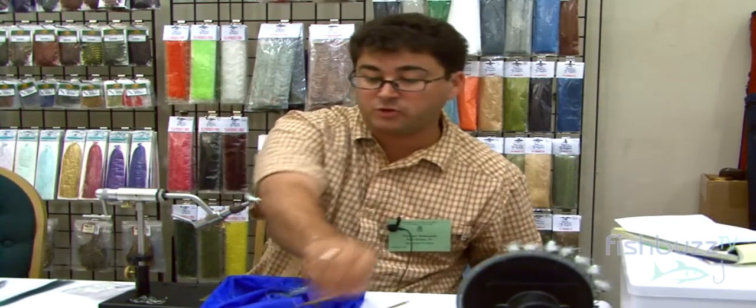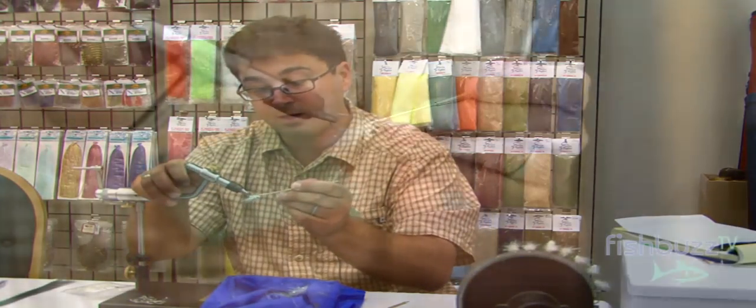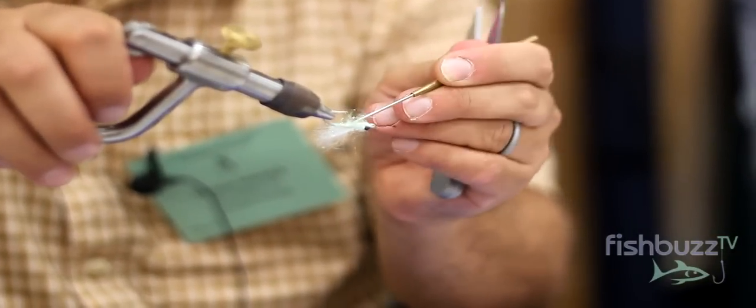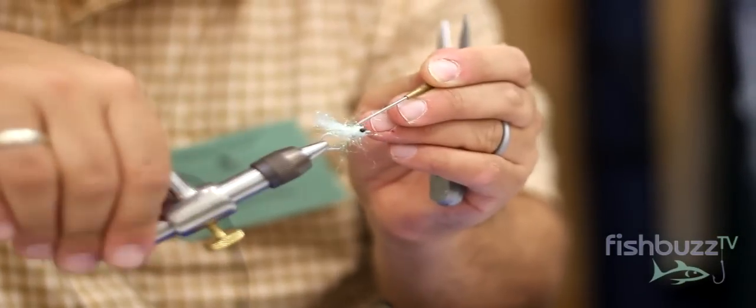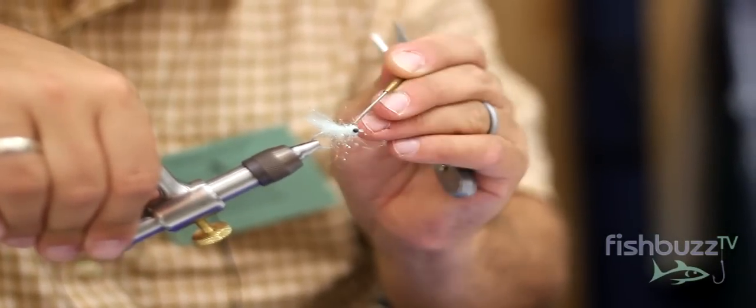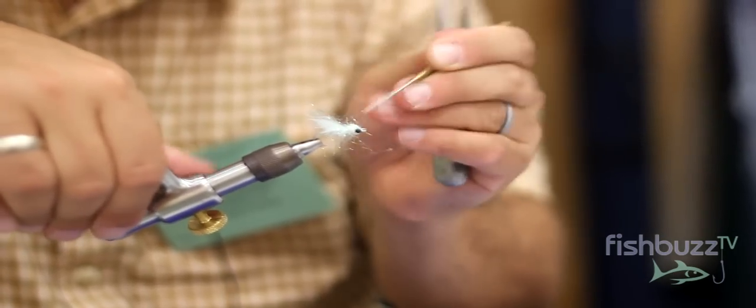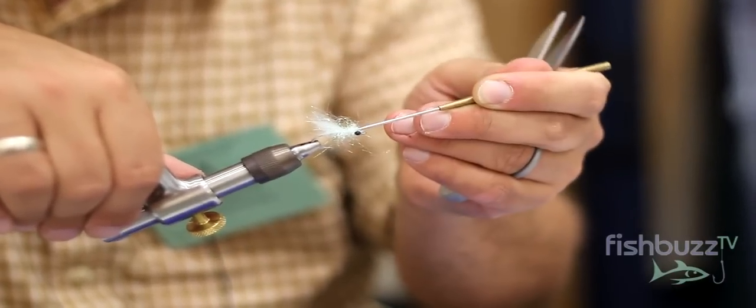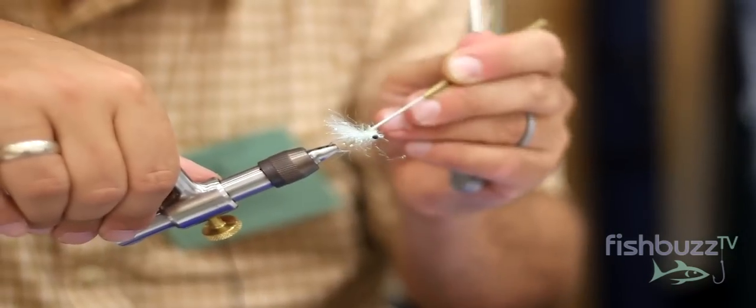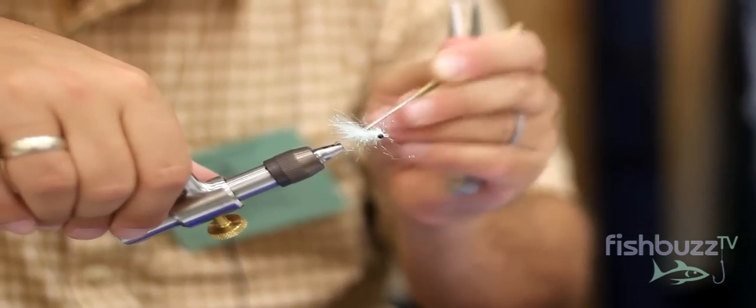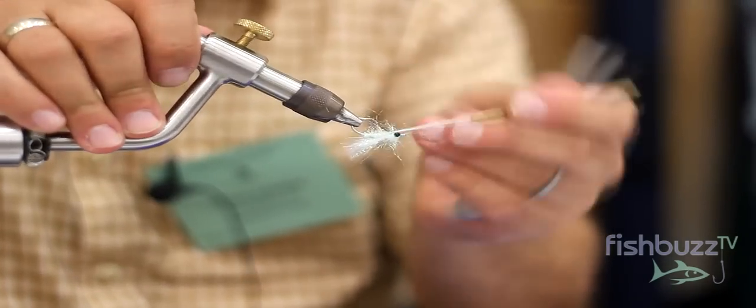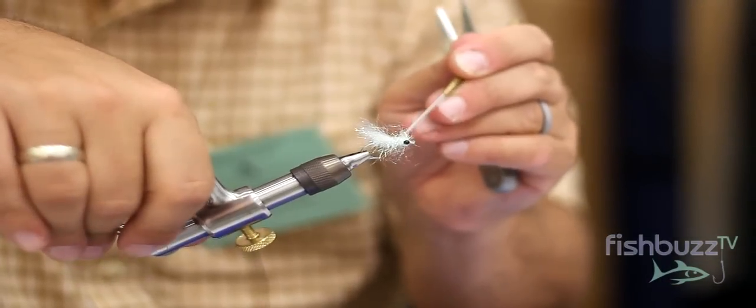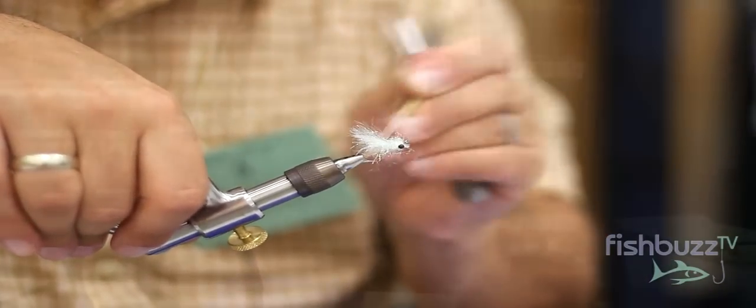And this is probably the most important step. It's just picking out some of the dubbing. The ice dub is a little coarse dubbing, it's going to stick out really nice. And all these little fibers that stick out, this is what gives this fly life in the water. You want to make it look ugly, because that's what catches the fish. All these micro fibers is what will pulse and move in the water.